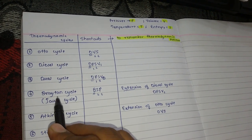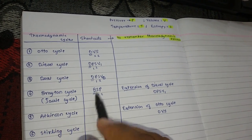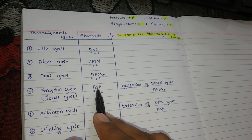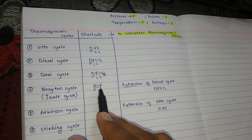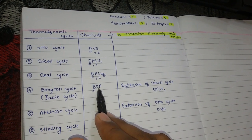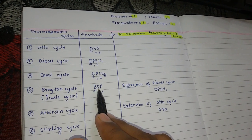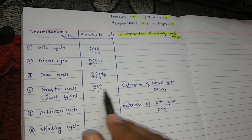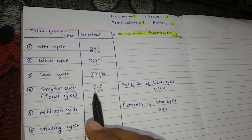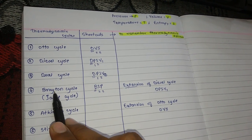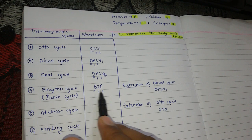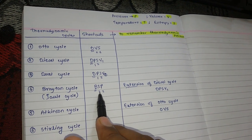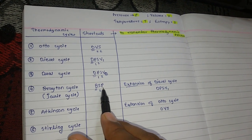Fourth is Brayton cycle. The shortcut is BSP — we can also remember BSP as Bahujan Samaj Party, which is the third largest party in India. Now, coming to the point: B stands for Brayton cycle, with two constant entropy and two constant pressure processes.